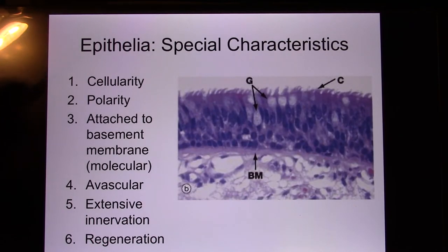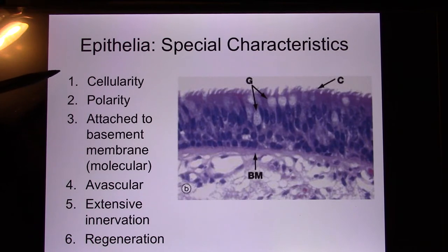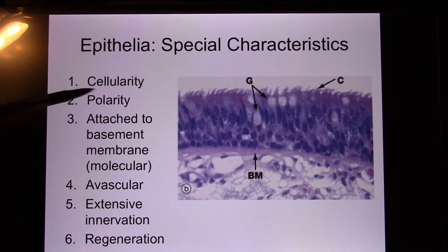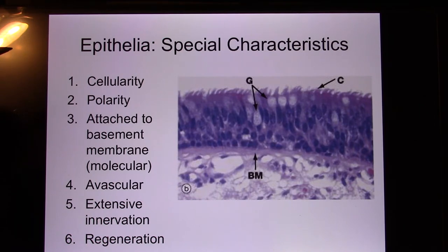Let's look at the characteristics of epithelial tissue. First, cellularity — a lot of cells. Epithelial tissues regenerate a lot, so if you damage your skin, it grows back. That's the advantage. The disadvantage is they are doing mitosis, cell division, all the time, so there is a higher chance of something going wrong and turning into cancer cells — for example, skin cancer.